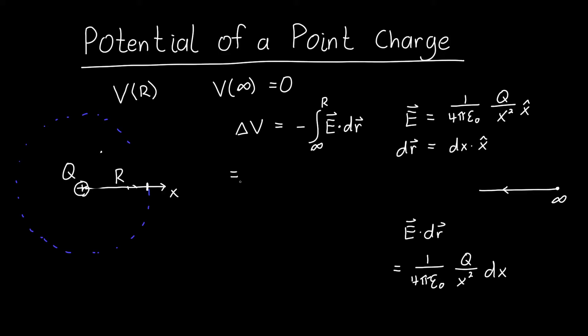And so if we actually do the integral we can pull out these constants so 1 over 4π epsilon naught and Q these are all constant. So we've got Q over 4π epsilon naught and we've kept the negative sign out front integral from infinity to some distance away R 1 over x squared dx.